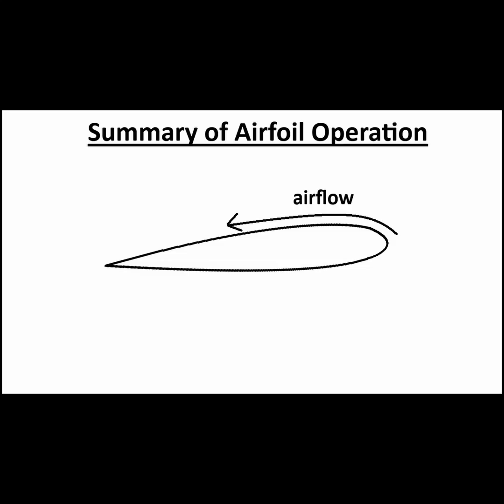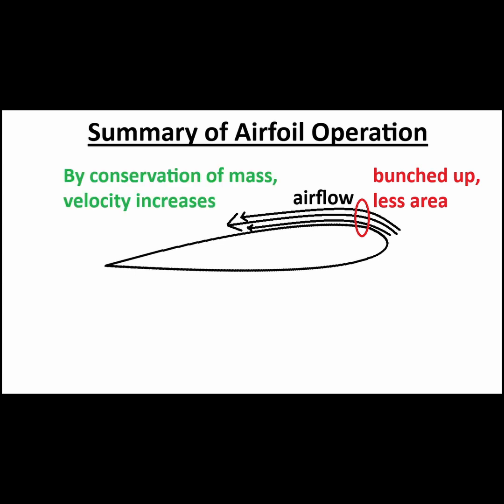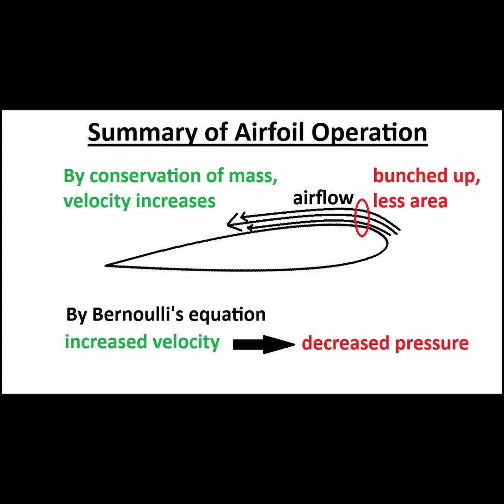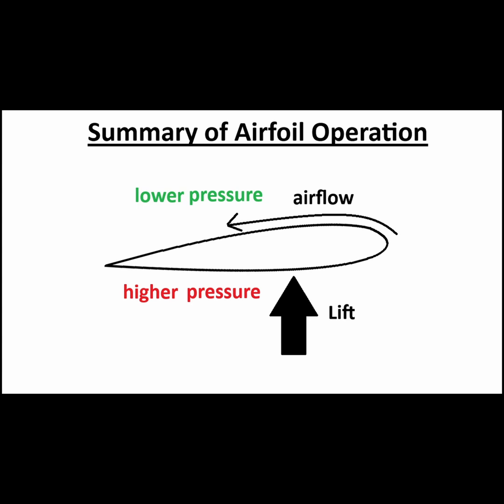So to summarize: air is forced to move around the airfoil, which is obstructing the path of the airflow. The airstream bunches up as it moves over the top of the wing, which reduces the area that the air can flow through. Due to the conservation of mass, the air is forced to speed up to maintain a constant airflow. Then, by Bernoulli's equation, the increase in air velocity means that there is also a decrease in pressure. The net difference between the air pressure above the wing and the air pressure below the wing results in a lifting force.